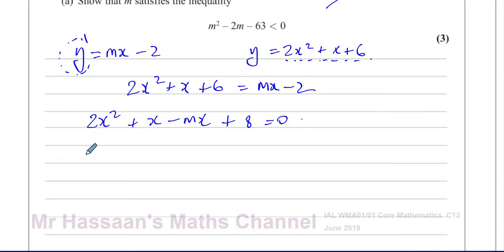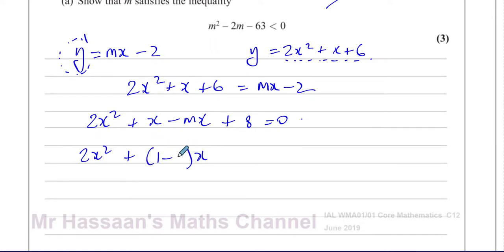I'll write this as 2X squared, taking X as common for the middle terms to get 1 minus M as the coefficient of X. So the equation is 2X squared plus (1 minus M)X plus 8 equals 0. If I expand that, I get X minus MX, giving the same result.